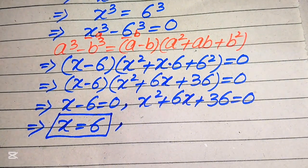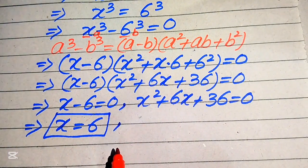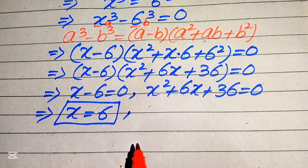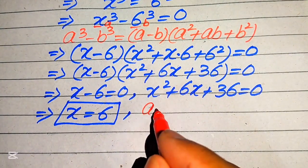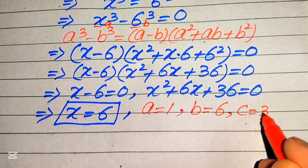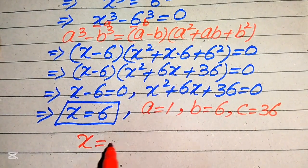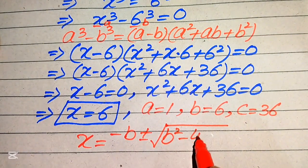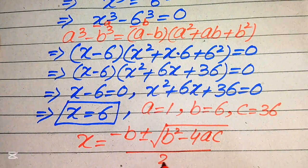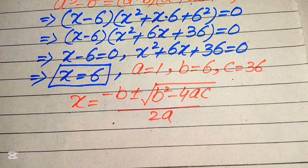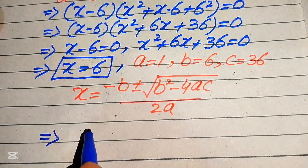To find the other roots we solve the second quadratic equation x squared plus 6x plus 36 equals 0 using the quadratic formula. The coefficients are a equals 1, b equals 6, and c equals 36. The quadratic formula is x equals minus b plus or minus square root of b squared minus 4ac, all divided by 2a.